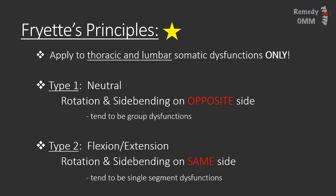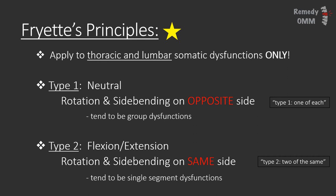So what are Freyett's principles? These are rules in which vertebral motion falls, and they apply to the thoracic and lumbar spines only. There are two you need to know. Type 1 somatic dysfunctions: when a vertebra is in a neutral position, rotation and side bending are in opposite directions. For example, if L4 is neutral and rotated left, it is side bent right. These tend to be group dysfunctions. Type 2 dysfunctions: when a vertebra is flexed or extended, rotation and side bending are in the same direction. The way to remember this: type 1 — one of each; type 2 — two of the same. So if flexed or extended and rotated right, side bending must also be right.